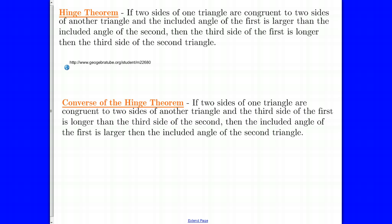The hinge theorem says: if two sides of one triangle are congruent to two sides of another triangle — basically comparing two congruent doorways. Looking in the classroom, the doorway into the classroom and the doorway into the office are through the exact same door, the opening is exactly the same. The hinge of each of those doors represents the angle measurements. So what the hinge theorem is saying is: if that door is open more than the other doorway, then the third side is going to be longer than the other third side of the triangle.